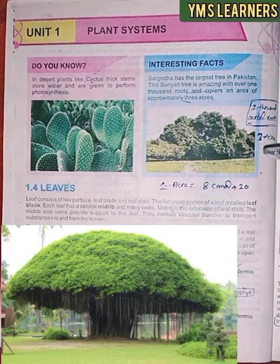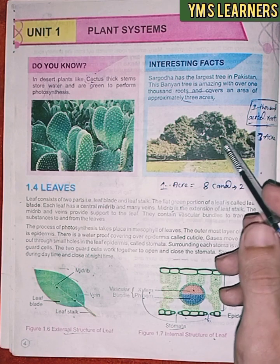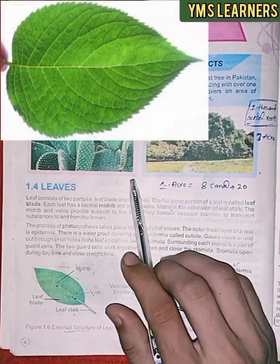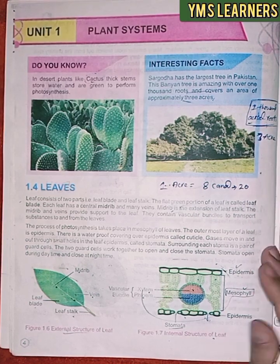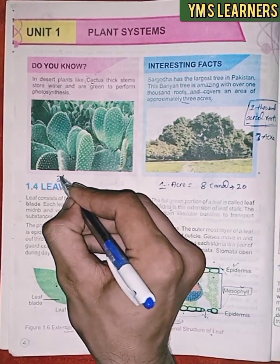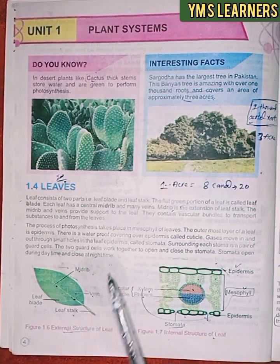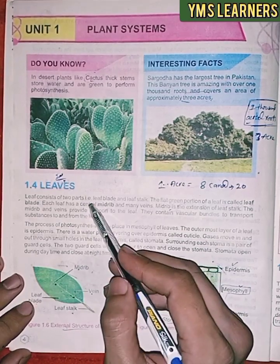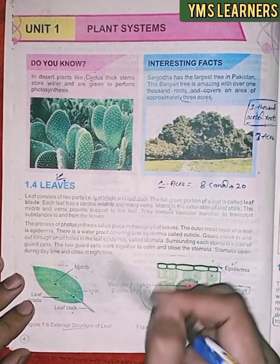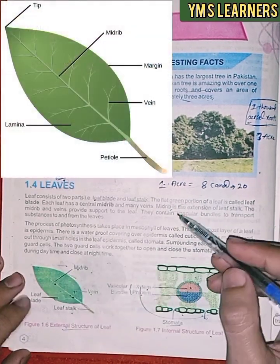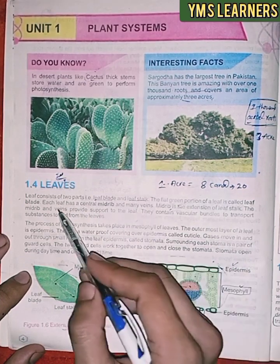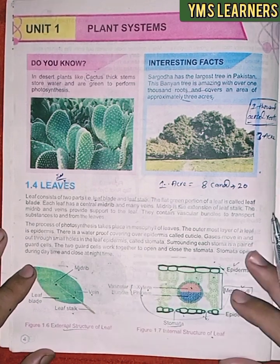Now we will discuss the next topic: leaves. Leaves consist of two parts — the leaf stalk and the leaf blade. The flat green portion of a leaf is called the leaf blade. Each leaf has a central midrib and many veins.